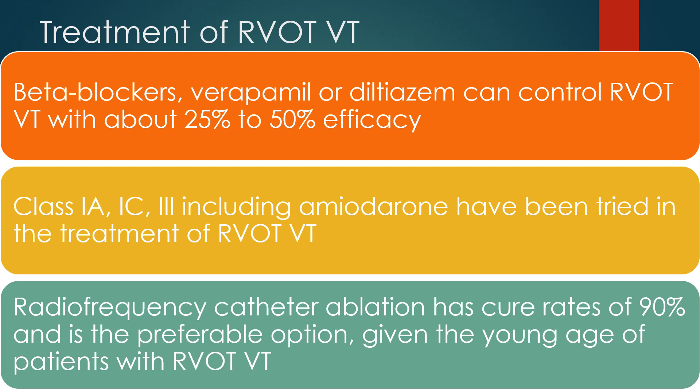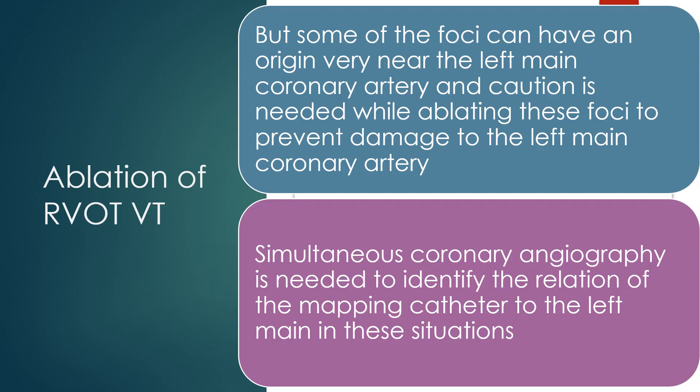Beta blockers, verapamil, or diltiazem can control RVOT VT with about 25 to 50% efficacy. Class 1A, 1C, and class 3 drugs including amiodarone have also been tried in treatment. Radiofrequency catheter ablation has cure rates of 90% and is the preferable option given the young age of patients with RVOT VT. However, some foci can have an origin very near the left main coronary artery, and caution is needed while ablating these foci to prevent damage to the left main coronary artery.